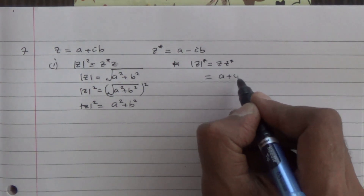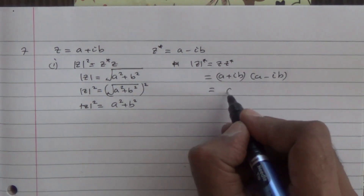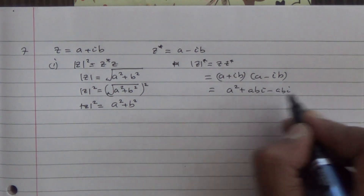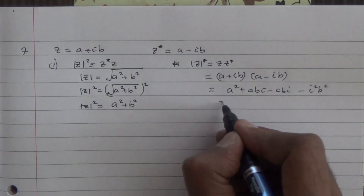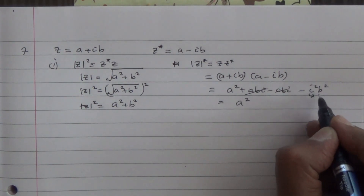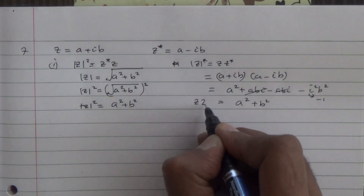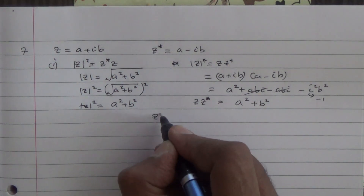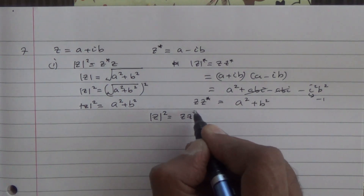So z is a plus ib times the conjugate a minus ib. That's going to be a times a, which is a squared, plus abi minus abi, and then minus i squared b squared. The middle terms cancel out, and I'm left with a squared. And what is i squared? It is minus one. Minus minus becomes plus, and we have b squared. As can be seen, these two have been proved. We can confidently say that the modulus of z squared is equal to the complex number z times its conjugate.